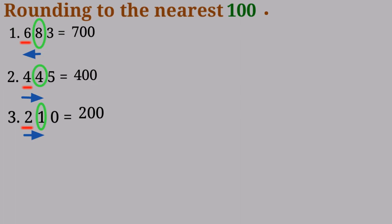Number 4: 164. 1 is in the hundreds place and 6 is in the tens place. Since 6 is a rounding up number, it has the power to push the 1 up. So I'll take 6 and 4, turn them to 0, and it will become 200.